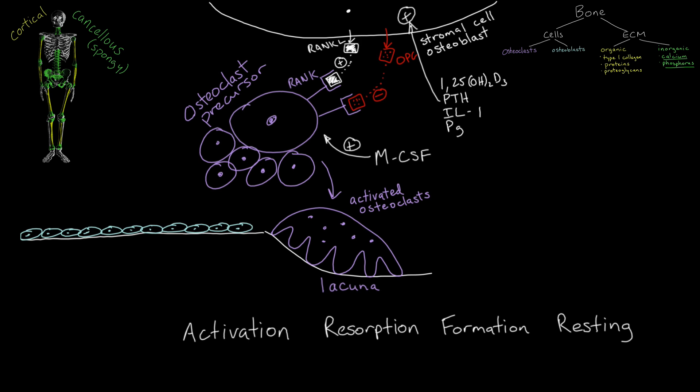This step occurs because cathepsin K, a protease enzyme secreted by the osteoclast into the acidic resorptive pit, and a potential future target of osteoporosis therapy, catabolizes bone. The resorption phase takes about three to four weeks to complete.